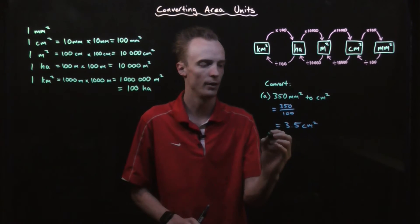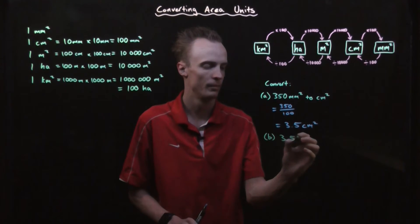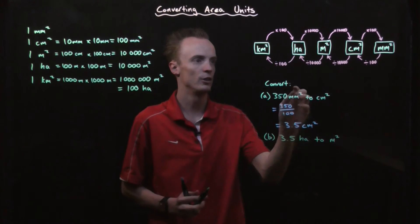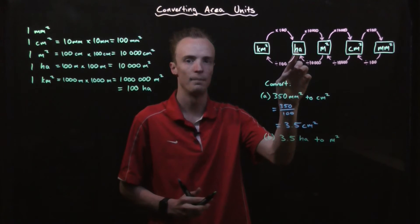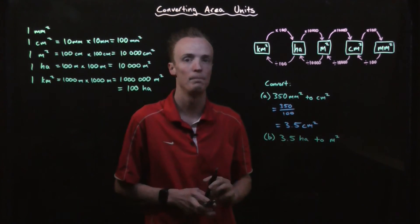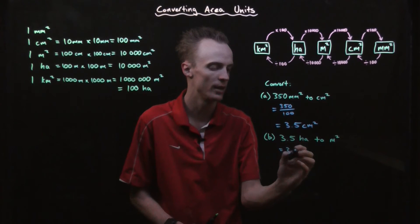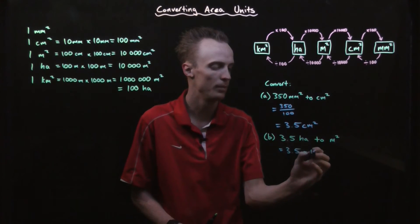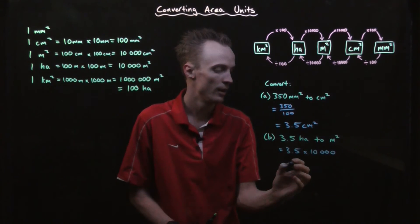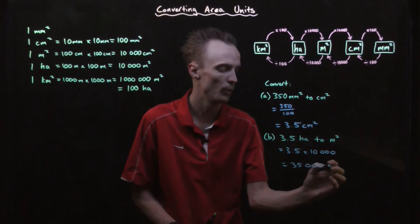What if I wanted to convert 3.5 hectares into square metres? I look at where my hectare units are in the conversion chart, then look at how to get to square metres. In this case I'd need to multiply by 10,000. So I take my 3.5 hectares and multiply by 10,000, which gives me 35,000 square metres.